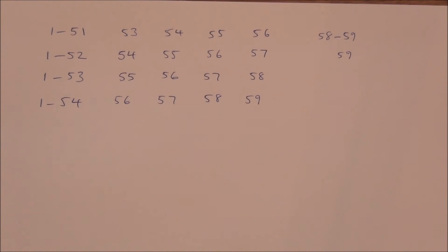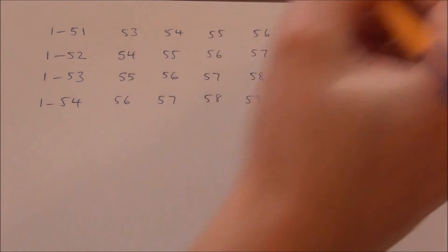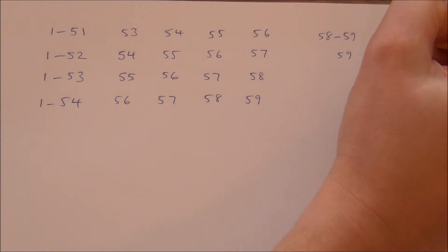For the later sequences, for instance, 53, 54, 55, 56, we can choose any 2 from either 1 to 51 before the sequence, or 58 to 59 after the sequence. So, there's 51 here, 2 there, again, that's 53. So, 53 choose 2.